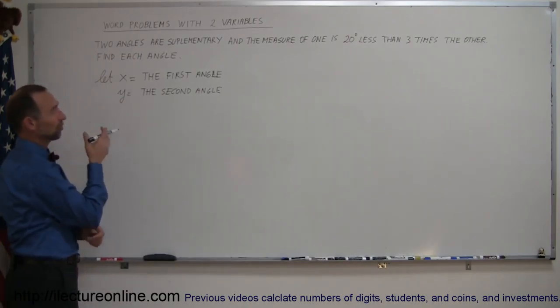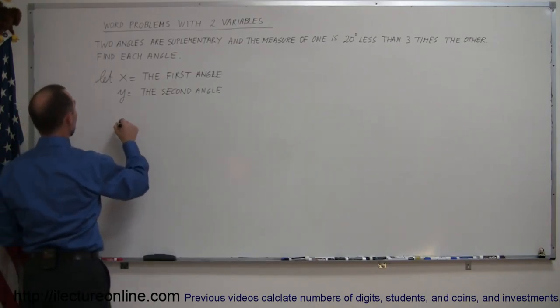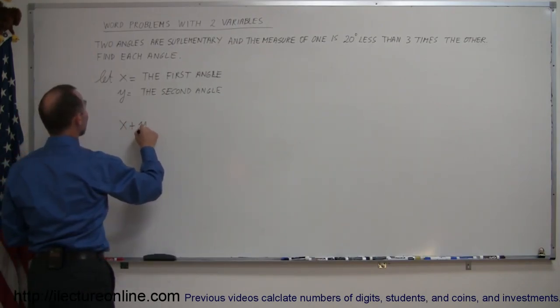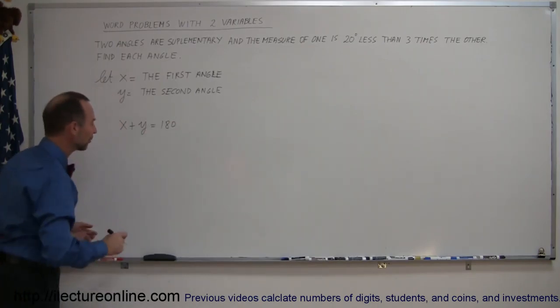So if the two angles are supplementary, that means they must add up to 180 degrees. That means x plus y equals 180. There's our first equation.